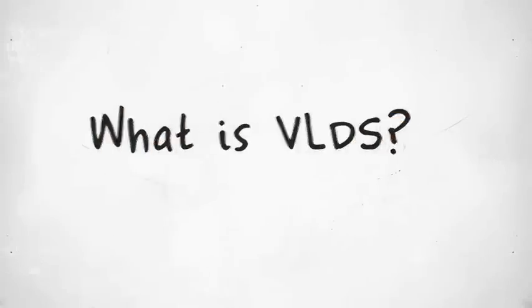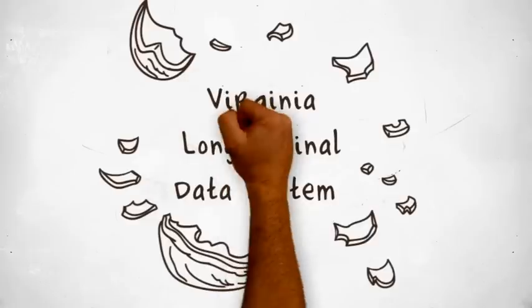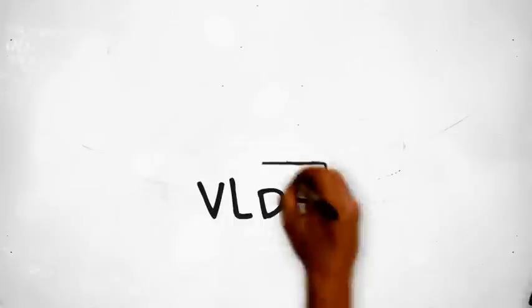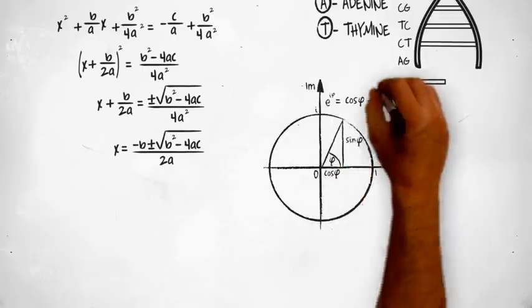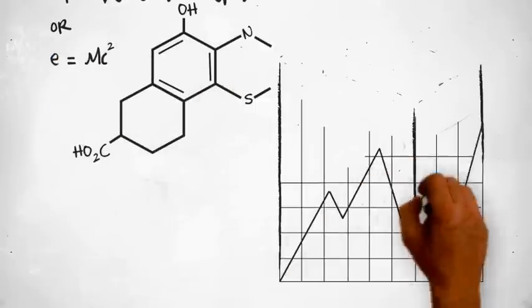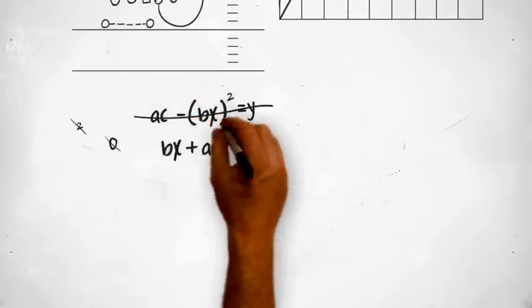What is VLDS? In a nutshell, the Virginia Longitudinal Data System, or VLDS, securely links de-identified data across K-12 and other state agencies. This information is then accessed, analyzed, and communicated to state decision and policymakers to ensure continuous improvement in Virginia's education system and other state services.